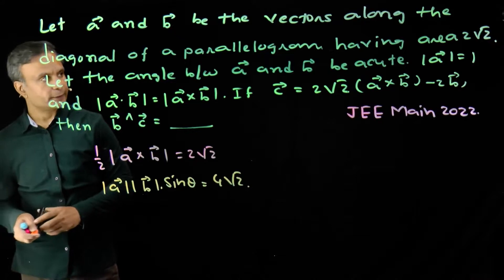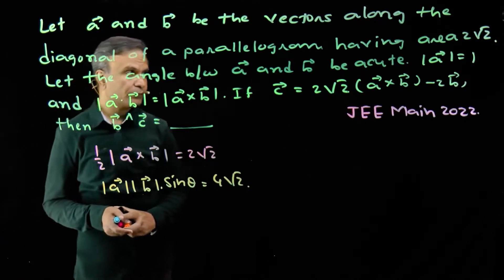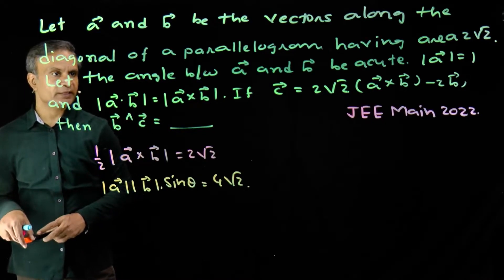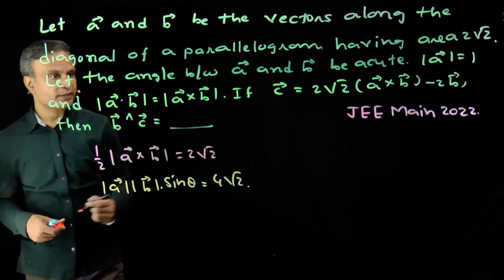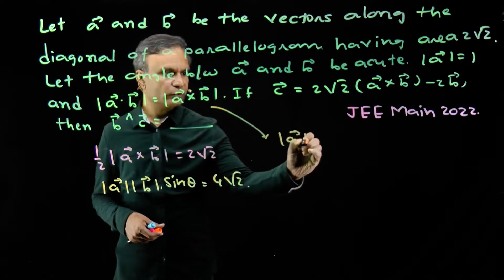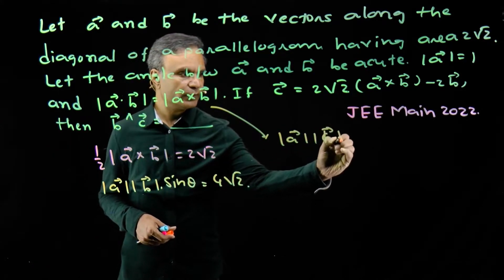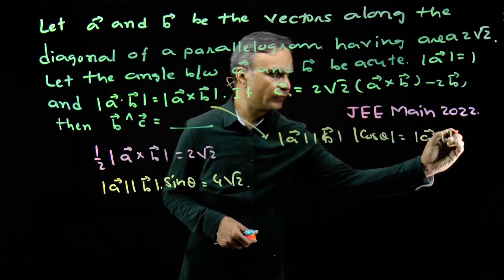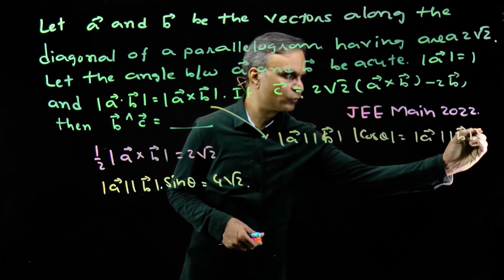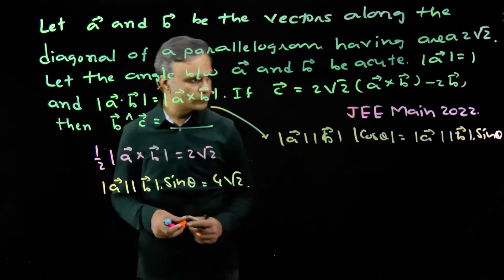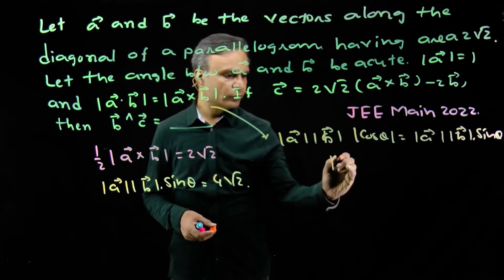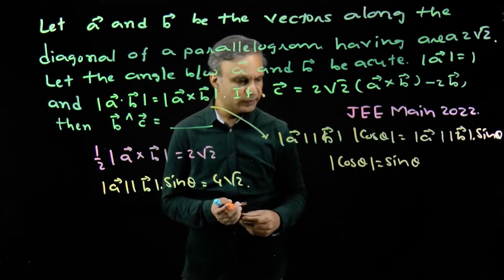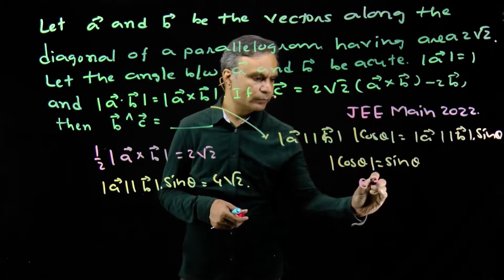Modulus of a is 1, so we do not have modulus of b or angle θ individually, but we have the condition that modulus of (a dot b) equals modulus of (a cross b). From this, modulus of a times modulus of b times cosθ equals modulus of a times modulus of b times sinθ. Since sinθ is positive for θ in (0, π), we get |cosθ| equals sinθ, giving us θ equals π/4.